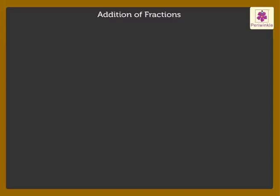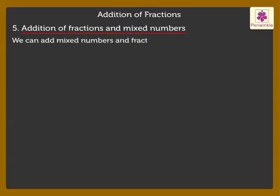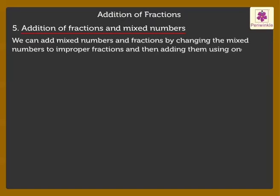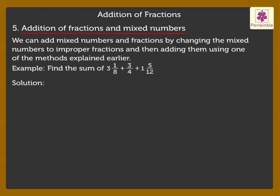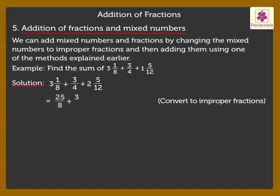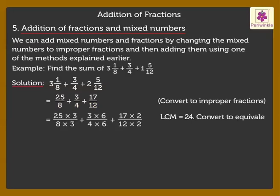And lastly, 5. Addition of Fractions and Mixed Numbers. We can add mixed numbers and fractions by changing the mixed numbers to improper fractions and then adding them using one of the methods explained earlier. Add the given fractions. Firstly, we convert the mixed numbers to improper fractions. We get the unlike fractions 25 upon 8, 3 upon 4, and 17 upon 12. Here, the LCM of 8, 4, and 12 is 24. Convert the fractions to their respective equivalent fractions with the LCM 24 as the denominator.